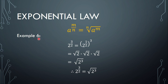Example 6: if we have 2 to the power of 3 over 2, by using law number 3 we can extract the 3 out, giving us 2 to the power of 1 over 2, to the power of 3. Now, 2 to the power of 1 over 2 is the square root of 2, so we have the square root of 2 multiplied 3 times.